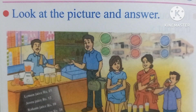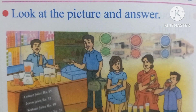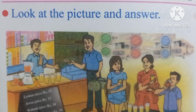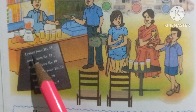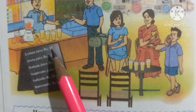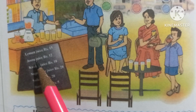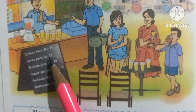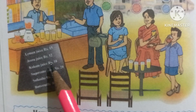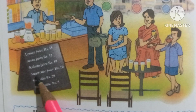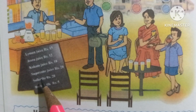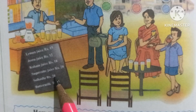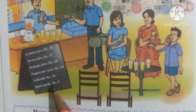Look at the picture and answer. This is a picture of a juice center. On the board, the prices are listed: lemon juice is Rs. 15, jeera juice is Rs. 12, kokum juice is Rs. 10, sugarcane juice is Rs. 20, sol curry is Rs. 20, and buttermilk is Rs. 5.